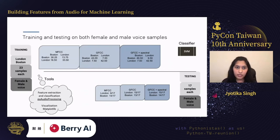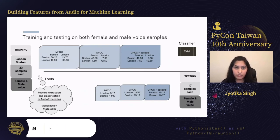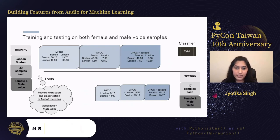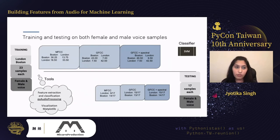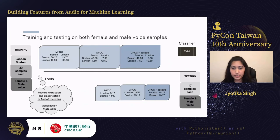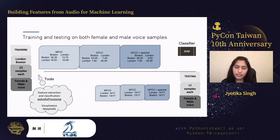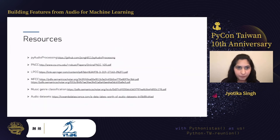When we mix both male and female samples in training to make the dataset more representative, we see a massive improvement in the MFCC model alone. GFCC still outperforms MFCC, and GFCC plus spectral on its own also improves. As the data becomes more representative, the model gets better — this is one of the key ways to improve a model, alongside data quality, sample count, and different classification models.